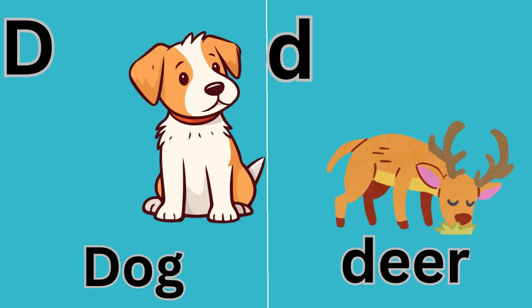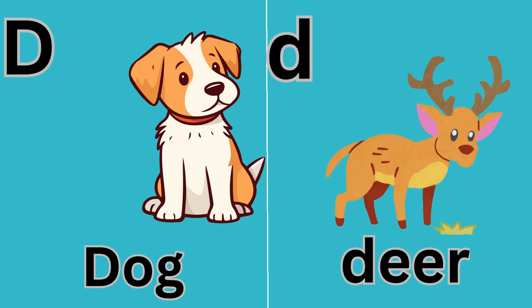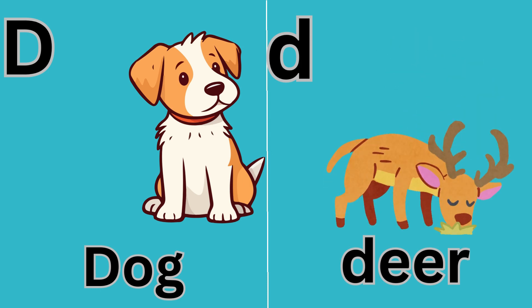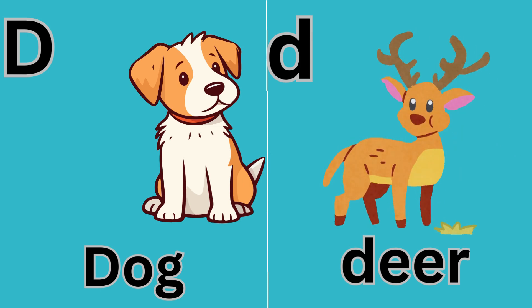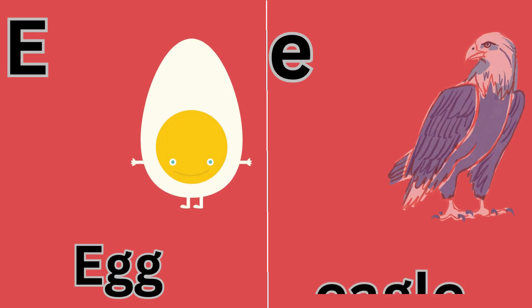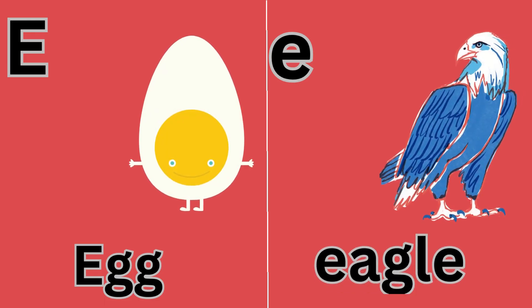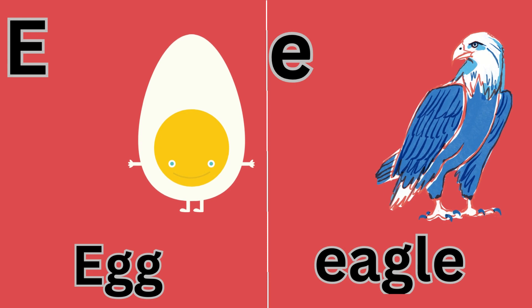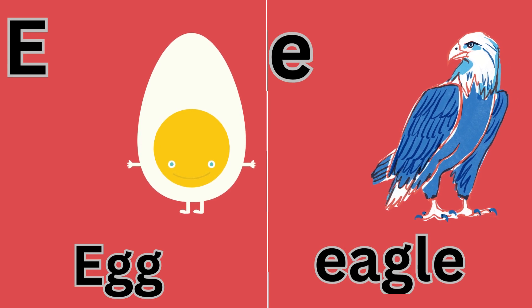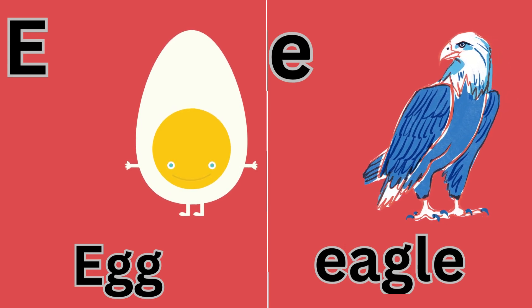D for Dog. D for Deer. E for Egg. E for Eagle.